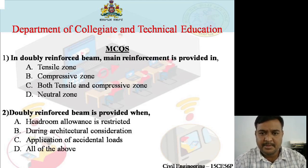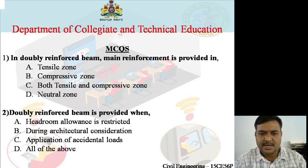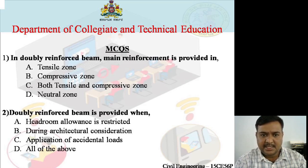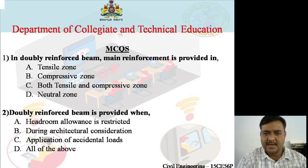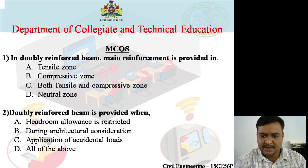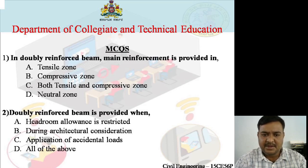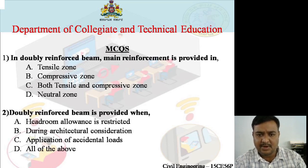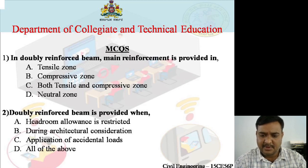MCQ 1: In a doubly reinforced beam, the main reinforcement is provided in — tensile zone, compressive zone, both tensile and compressive zone, or neutral zone. The right answer is C: both tensile and compressive zone. MCQ 2: A doubly reinforced beam is provided when — headroom allowance is restricted, application of accidental loads, or all of the above. The right answer is A: headroom allowance is restricted.